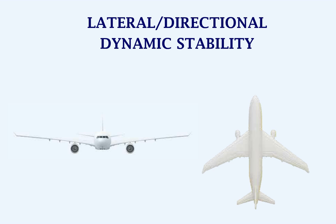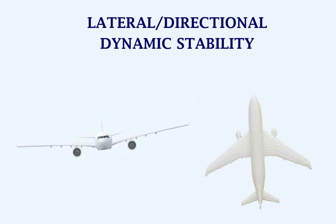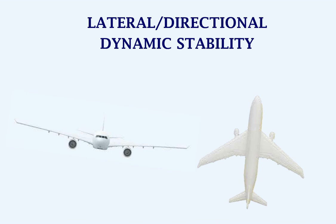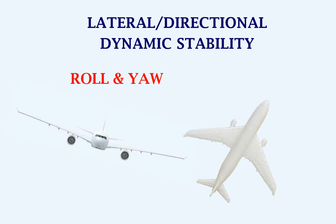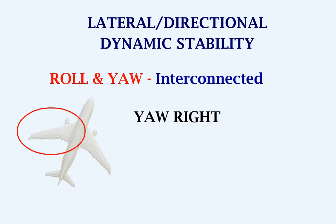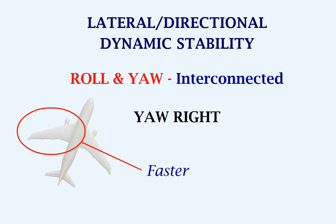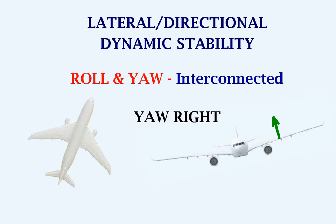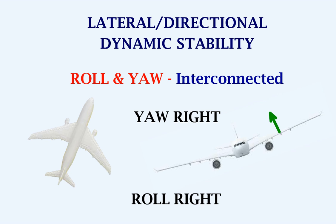Now let's look at a few cases related to lateral and directional dynamic stability. We have to combine these two because roll and yaw are interconnected. This means that if the aircraft yaws towards the right, the left wing will move faster than the right wing, so more lift is created on this wing, and hence the aircraft will automatically roll towards the right.